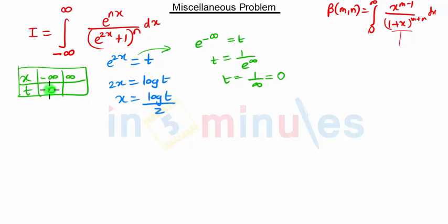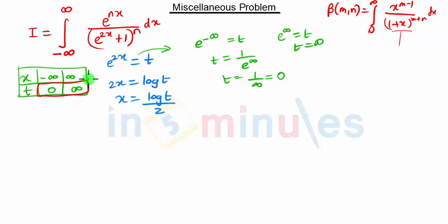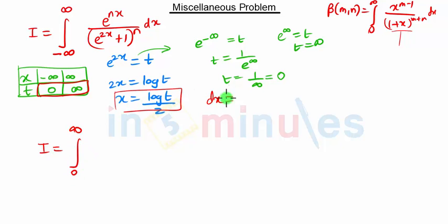We get t equal to 0 when we put t equal to 0, and when we put t equal to infinity we get e raised to infinity equal to t, so t will be infinity. Now our limits of integration are from 0 to infinity, which matches the Beta function integration. So we get i equal to integration from 0 to infinity, where x equals log t, so dx is the derivative of log t, which is 1 upon 2t into dt.